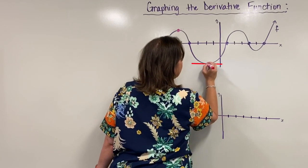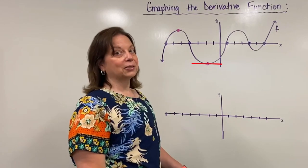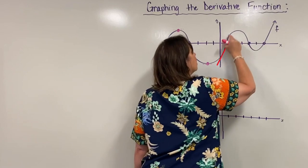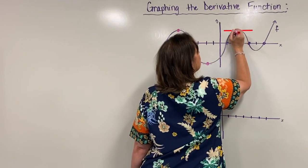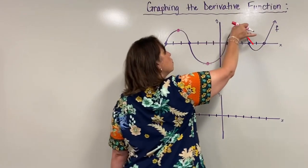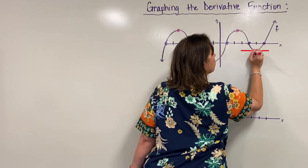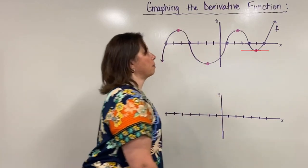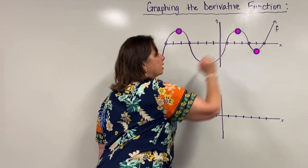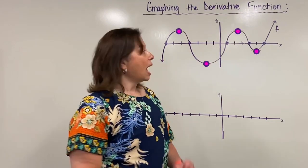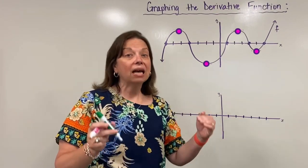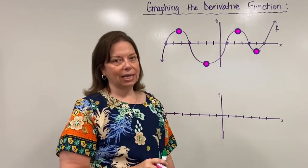Now I've got another perfectly horizontal tangent line right here. I keep going and then I have another perfectly horizontal tangent line here, and one more — another horizontal tangent at that point on the graph. So all four of these points happen to be where the slope of the tangent line is exactly zero because I actually have horizontal tangents.